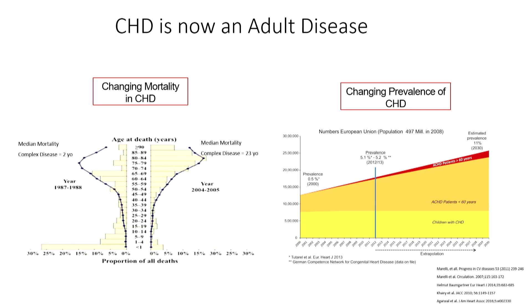This is looking at the changing mortality and changing prevalence of congenital heart disease over a 20-year period. Most mortality shifted from infancy to adulthood. Most patients with Fontans are now over the age of 30. Since 2012, there were equal numbers of pediatric and adult patients; by 2030, two-thirds of patients are going to be adults, with an increasing number over the age of 60. For the first time, these patients have both congenital and acquired heart disease.